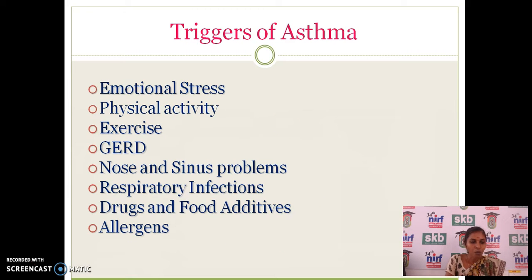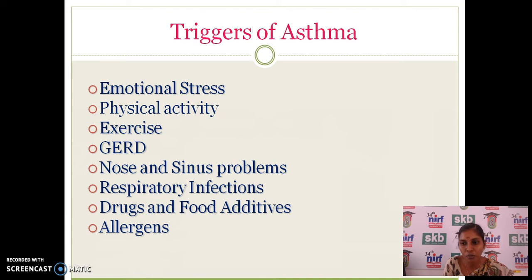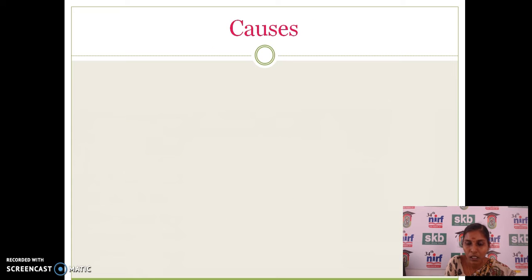We have some triggers for asthma, such as emotional stress, physical activities or exercises, and diseases or infections. Because of bronchial spasms, narrowing of the airway occurs, which does not allow a lot of air to enter the respiratory system. Also, allergens like pollens cause a foreign material to enter the body; the body refuses to accept it, triggering an inflammatory response and the release of mucus, which can also lead to asthma.